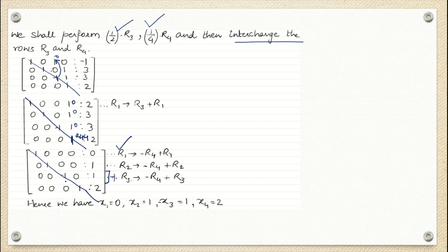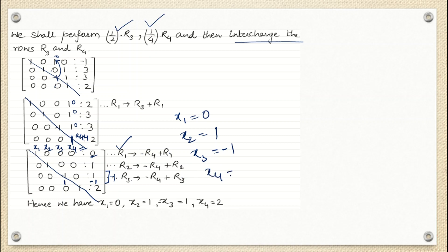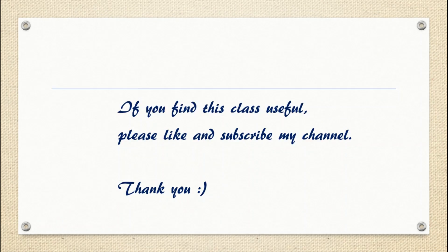The principal diagonal now has 1 with minus 1 below it. Reading the answers: 1 times x1 gives x1 = 0, 1 times x2 gives x2 = 1, 1 times x3 gives x3 = minus 1, and 1 times x4 gives x4 = 2. This is how we find the unknowns using the Gauss-Jordan method. If you find this class useful, please like and subscribe to my channel. Thank you.